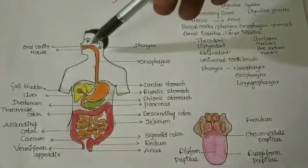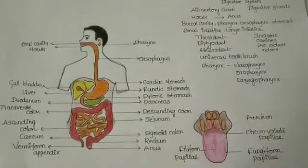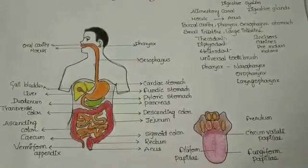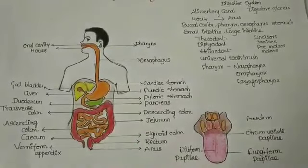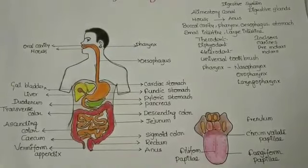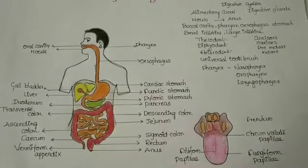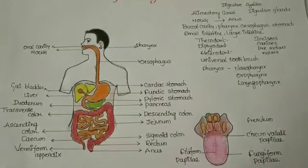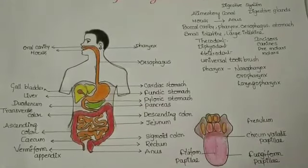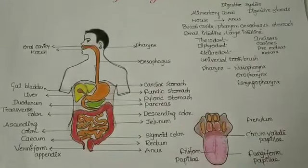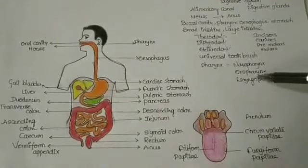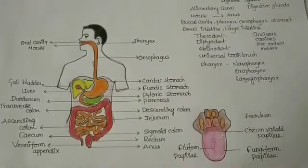The oral cavity leads into the pharynx. It is a common passage for food and air. The pharynx is divisible into nasopharynx, oropharynx, and laryngopharynx.